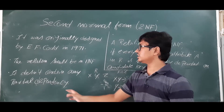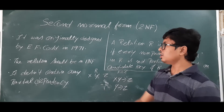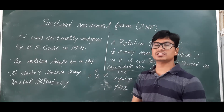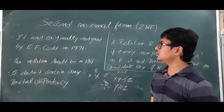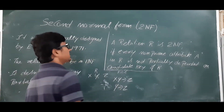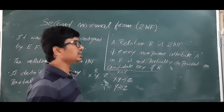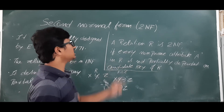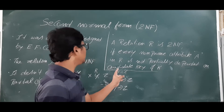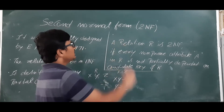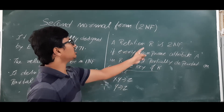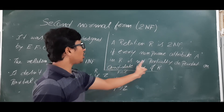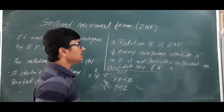The second condition is that it should not contain any partial dependencies. So the two rules are: it should be in 1NF, and it should not consist of any partial dependencies. A relation R is in 2NF if every non-prime attribute A in relation R is not partially dependent on the candidate key of relation R.